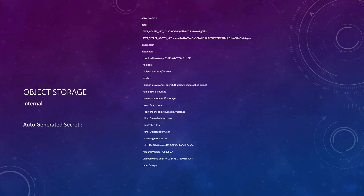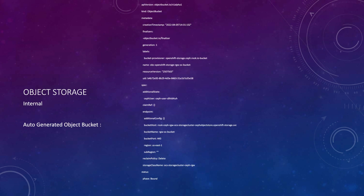Now let's see what else is automatically created when you create the object bucket claim. Here is the object bucket automatically created for you by ODF. Under the endpoint section, you can see the bucket name, which is similar to what we created in the previous slides, the bucket port 443 — that is the secure port — and also the storage class name, which is the same as what we mentioned earlier. So now with the object bucket, the secret, and object bucket claim all created, you can start reading and writing data into or from the bucket. You can download the AWS CLI or any other S3 protocol CLI that you can find, or develop one on your own if you understand S3 protocol very intimately.